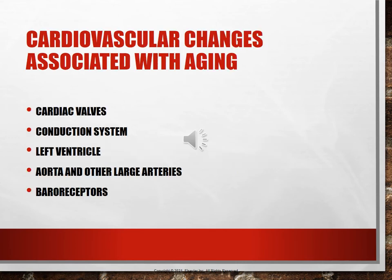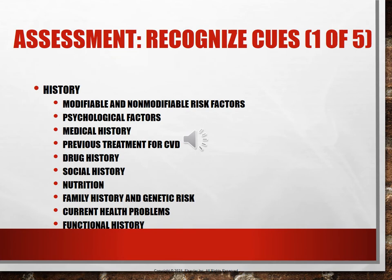Cardiovascular changes associated with aging are covered on page 618, with a large chart covering valves, the conduction system, the left ventricle, the aorta and other large arteries, and the baroreceptors. When taking a history of your cardiac patient, you want to discuss modifiable and non-modifiable risk factors, found on pages 618 and 619.